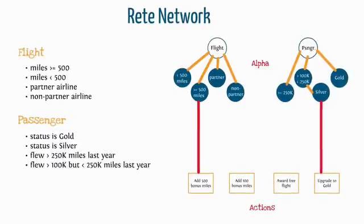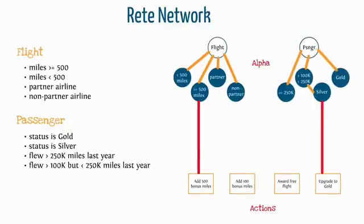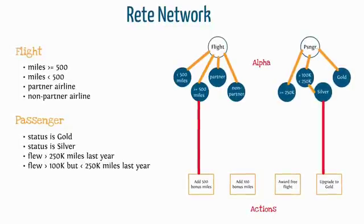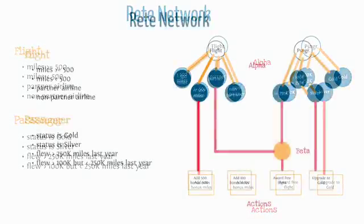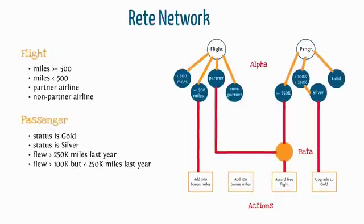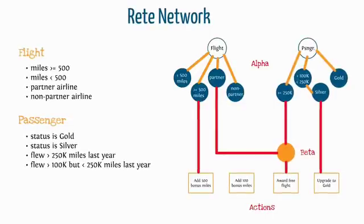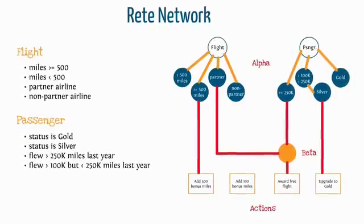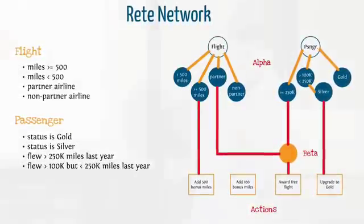Where it gets really particular is when you step from one object to another. When you start looking for commonalities or patterns between two different types of objects. That's where it plays out with what we call a beta network. A beta is where we can take two different patterns, join these things together in a join node and throw them towards some common goal. If you're on a partner flight and you've flown more than 250,000 miles last year, you get a free flight.